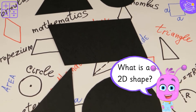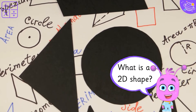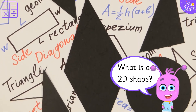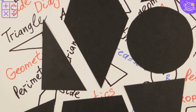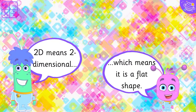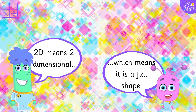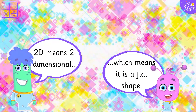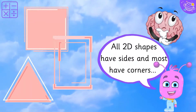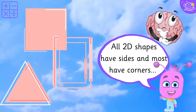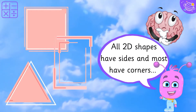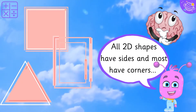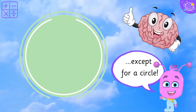What is a 2D shape? 2D means two-dimensional, which means it is a flat shape. All 2D shapes have sides and most have corners, except for a circle.